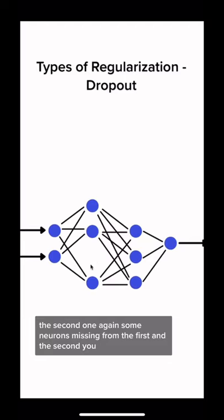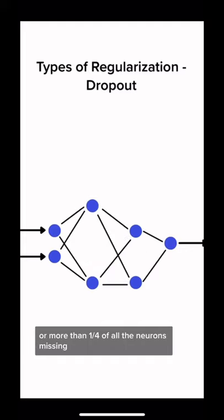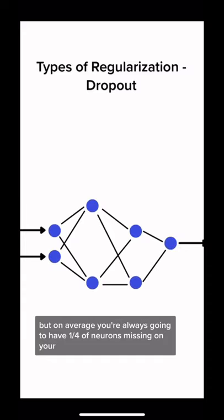You might have more or less than one-fourth of all the neurons missing, of course, but on average you're always going to have one-fourth of neurons missing while you're using dropout regularization during training time.